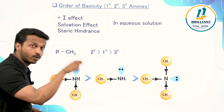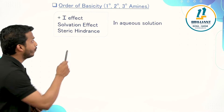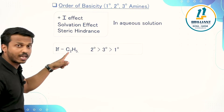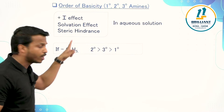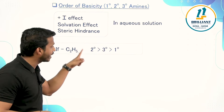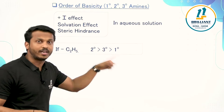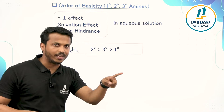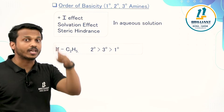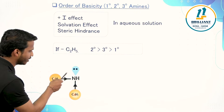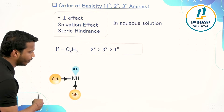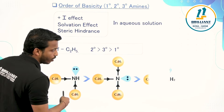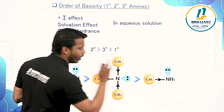If an ethyl group (C2H5) is present, the order of basicity changes to: secondary > tertiary > primary. So to summarize: if methyl group is present — secondary, primary, tertiary; if ethyl group is present — secondary, tertiary, primary.